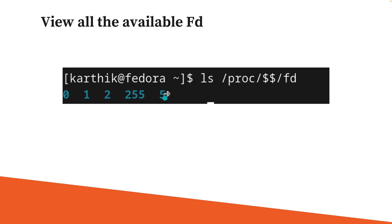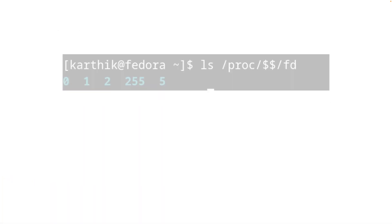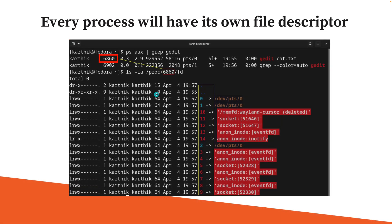I have also created a custom file and I'm going to show you how we can do that in this lecture. Every process will have its own file descriptor. So if you grab gedit or Firefox, you will notice that it has a process number, and you can put that process number in place of $$ to see all the file descriptor numbers for that process.